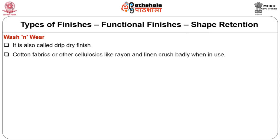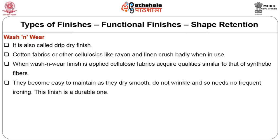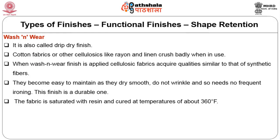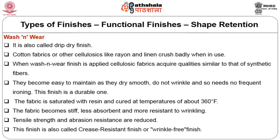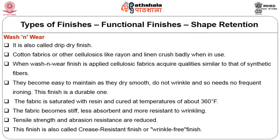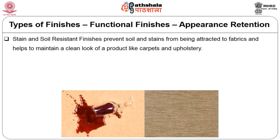Wash and wear finish (drip dry finish): cotton fabrics and other cellulosics like rayon and linen crush badly in use. When wash and wear finish is applied, cellulosic fabrics acquire qualities similar to synthetic fibers — they dry smooth, do not wrinkle and need no frequent ironing. This is a durable finish. The fabric is saturated with resin and cured at about 360°F. The fabric becomes stiffer, less absorbent and more resistant to wrinkling, though tensile strength and abrasion resistance are reduced. Also called crease resistant or wrinkle free finish.